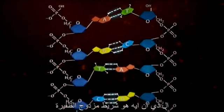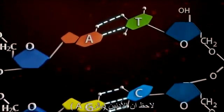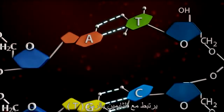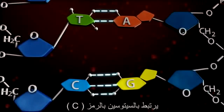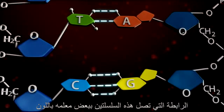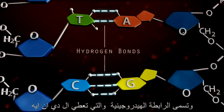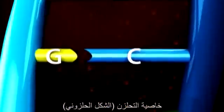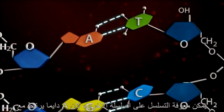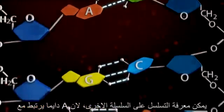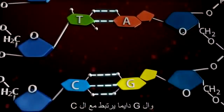DNA is a double-stranded molecule. Notice that adenine (A) forms bonds with thymine (T), and guanine (G) forms bonds with cytosine (C). The bonds that hold these two strands of DNA together are highlighted in light blue and are called hydrogen bonds. These hydrogen bonds give DNA its characteristic helical shape. Also, if you know the sequence of DNA on one strand, you can figure out the sequence of the other strand, because A always pairs with T and G always pairs with C.